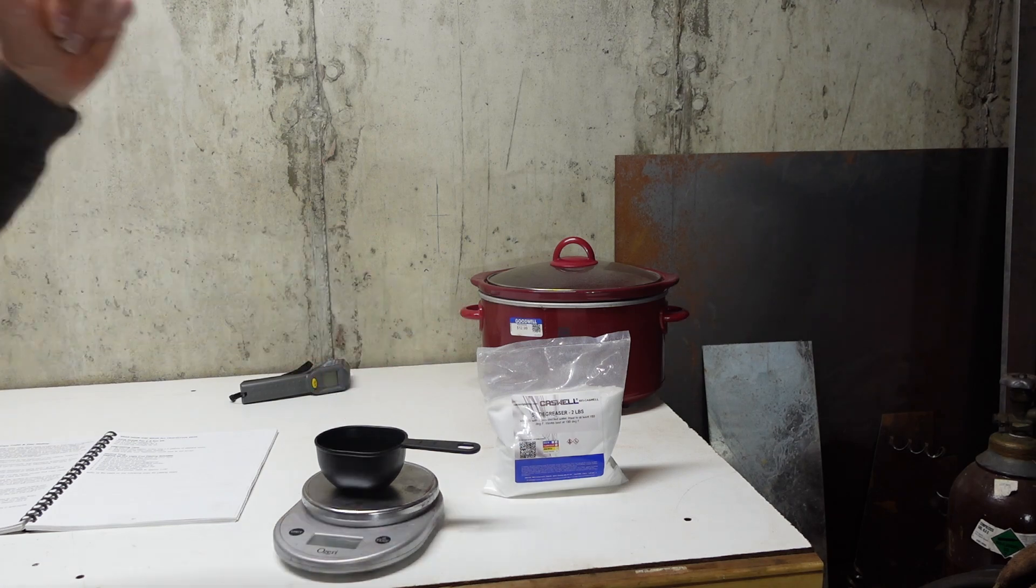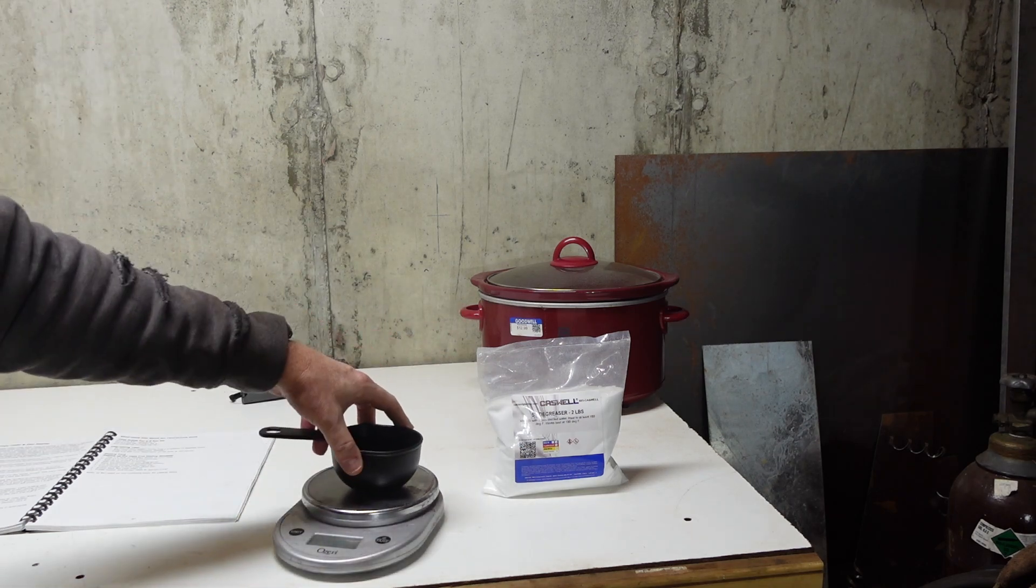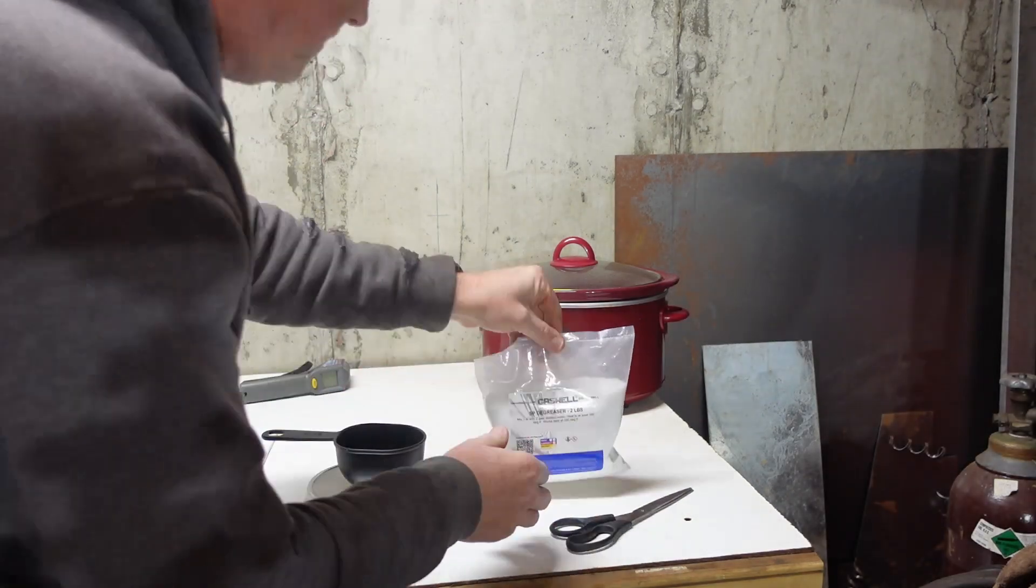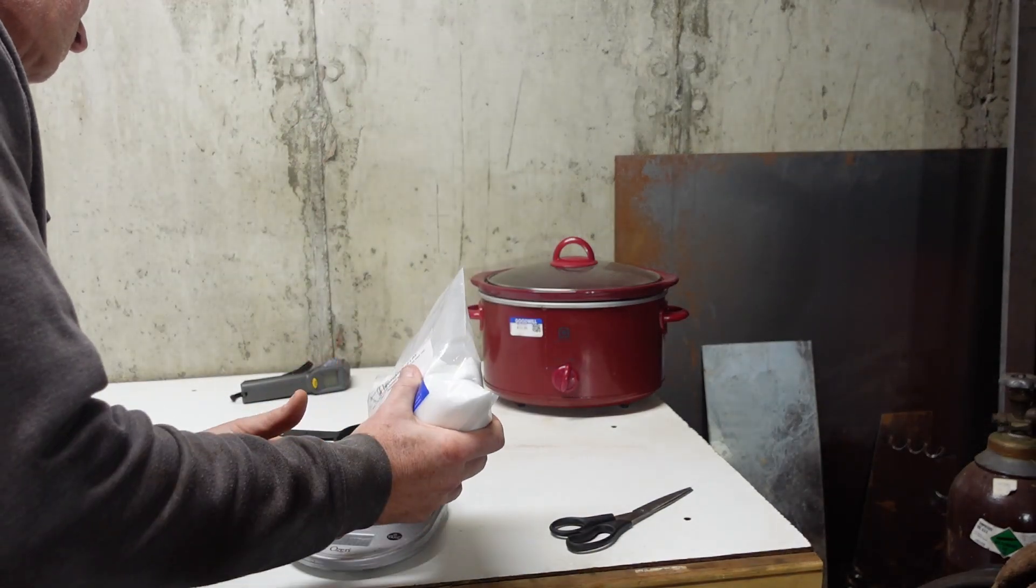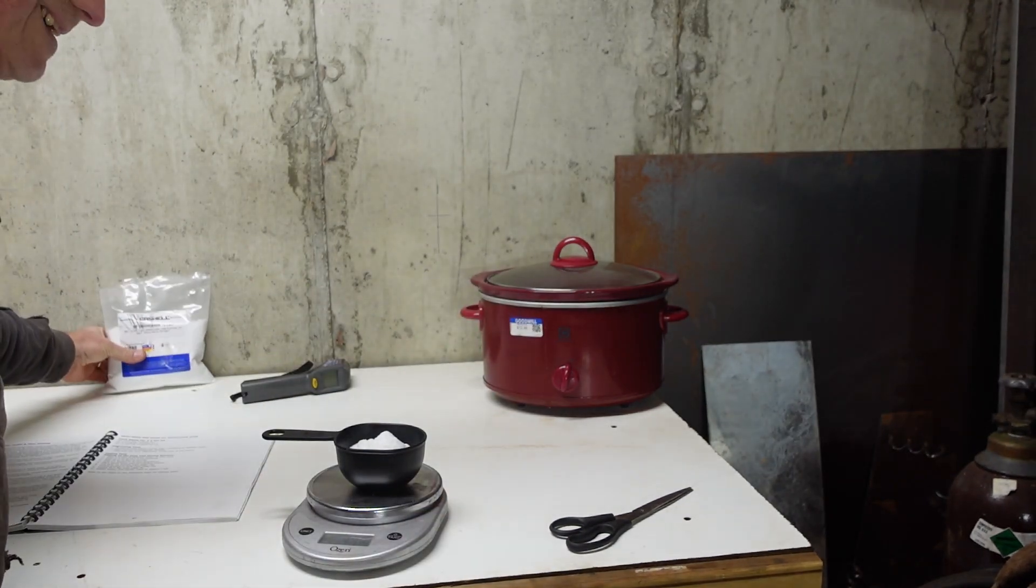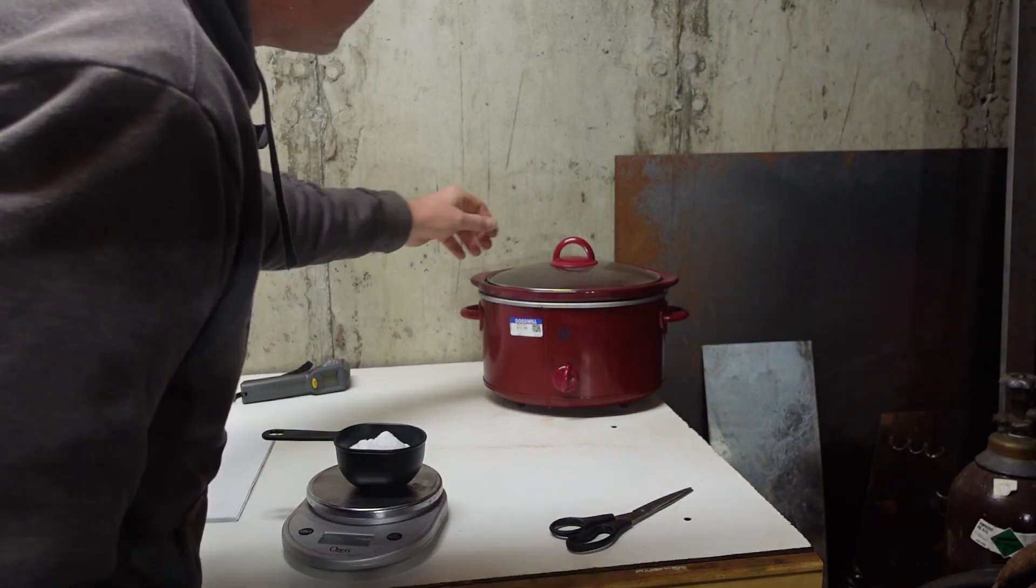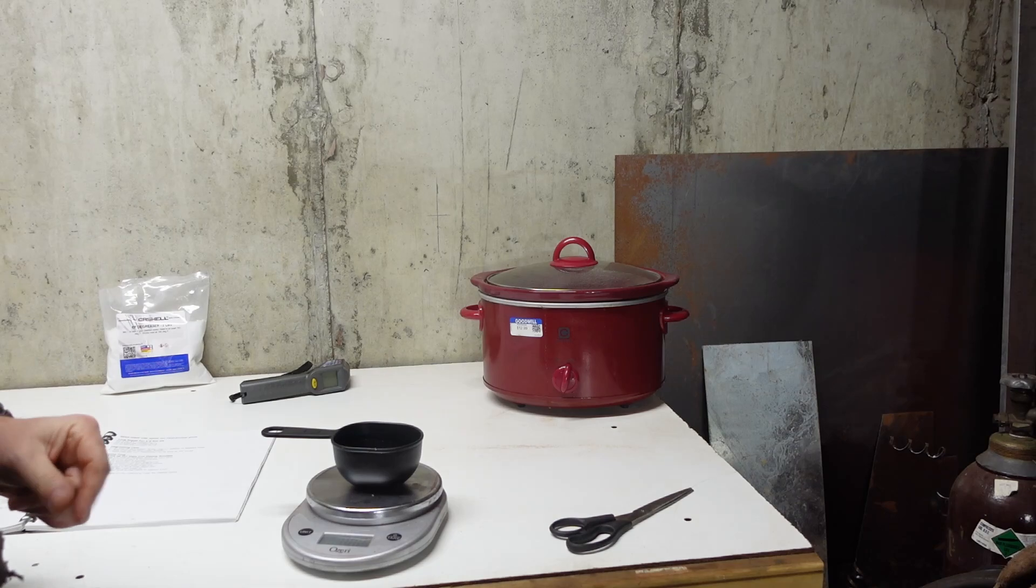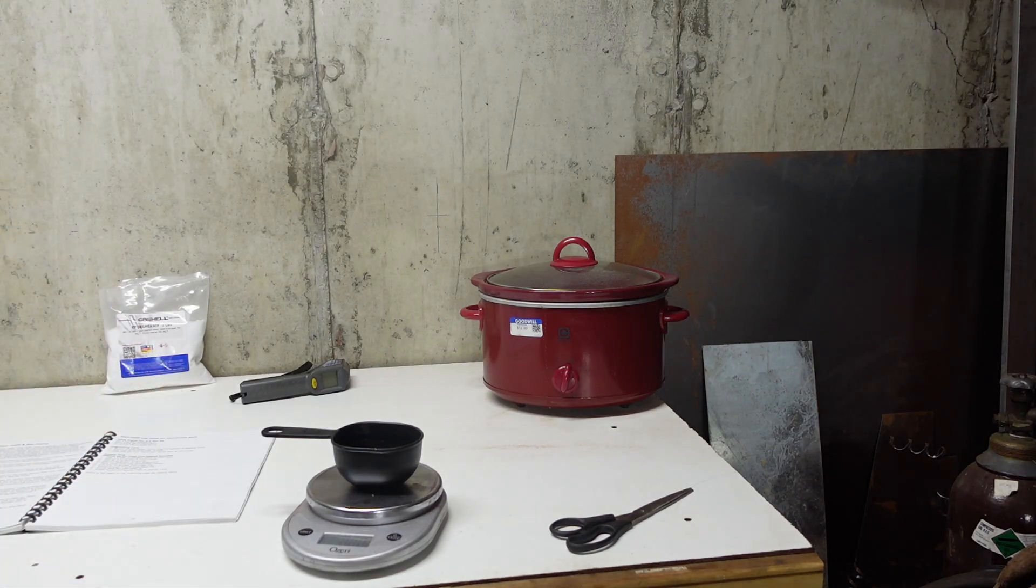This is one pound for two gallons, pretty small crock pot. So I only have about a half a gallon in there. So I'm only going to make up about four ounces. So we'll go ahead and cut that bag open, get four ounces measured in this cup here, pour it in there and get it stirred up.